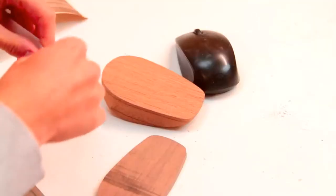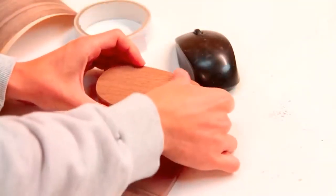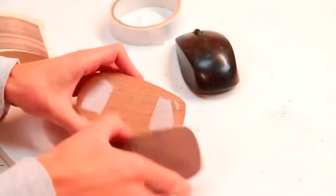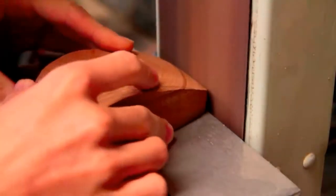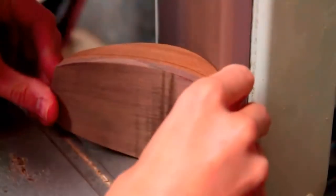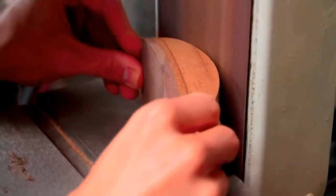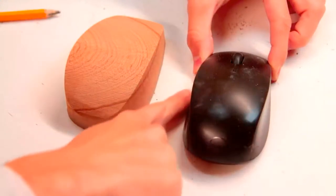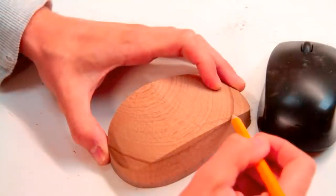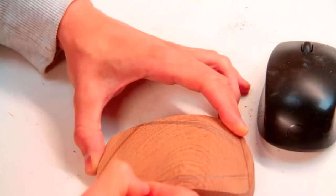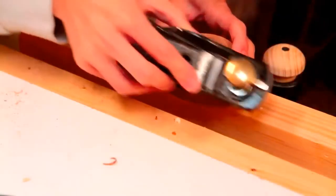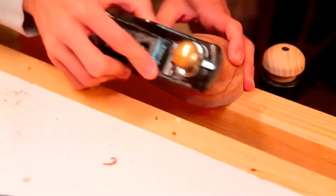I'll use some double-sided tape to hold the two pieces together for shaping. And now I'll use a variety of tools at my disposal to start developing the shaping of the mouse.